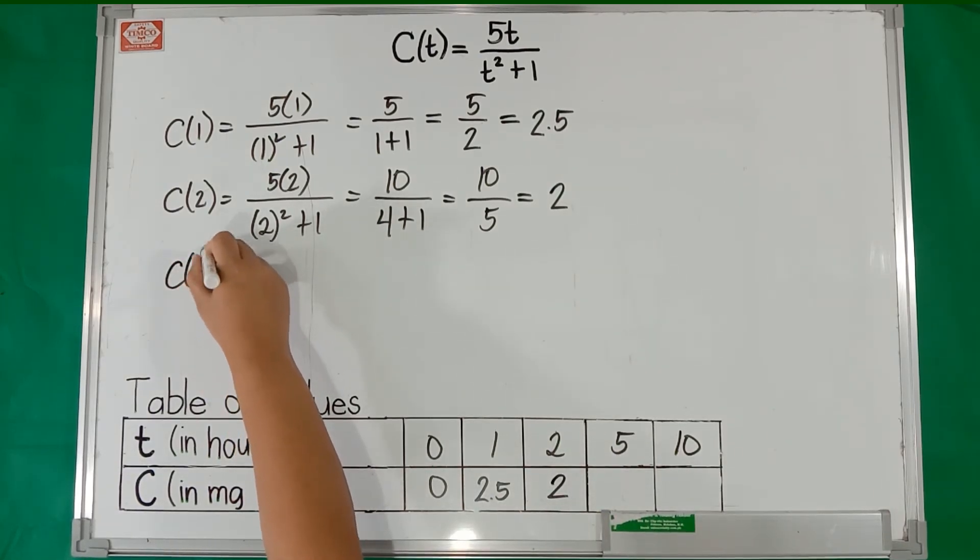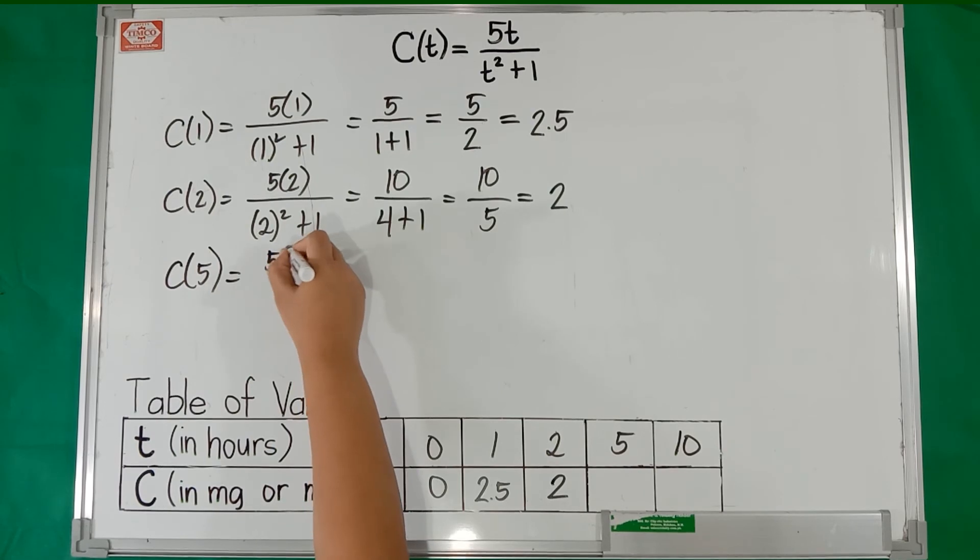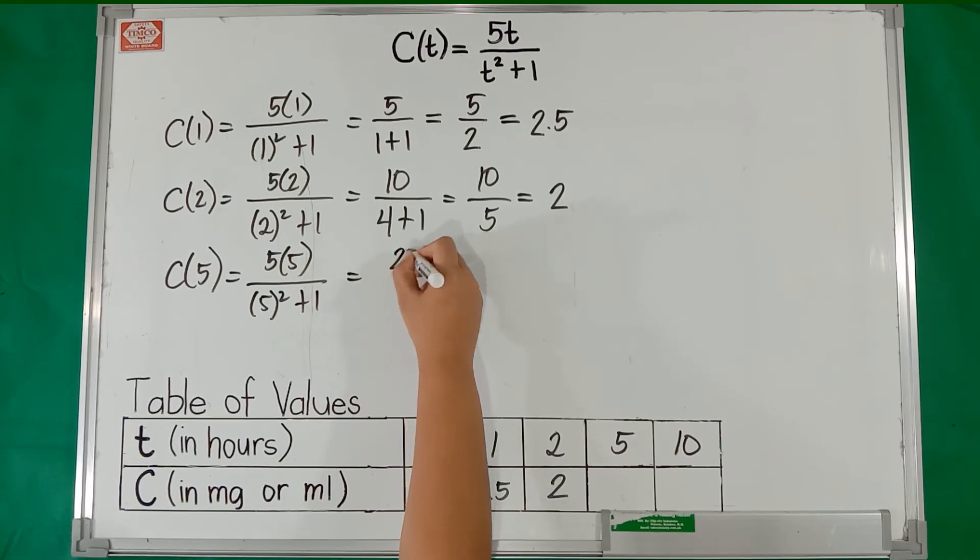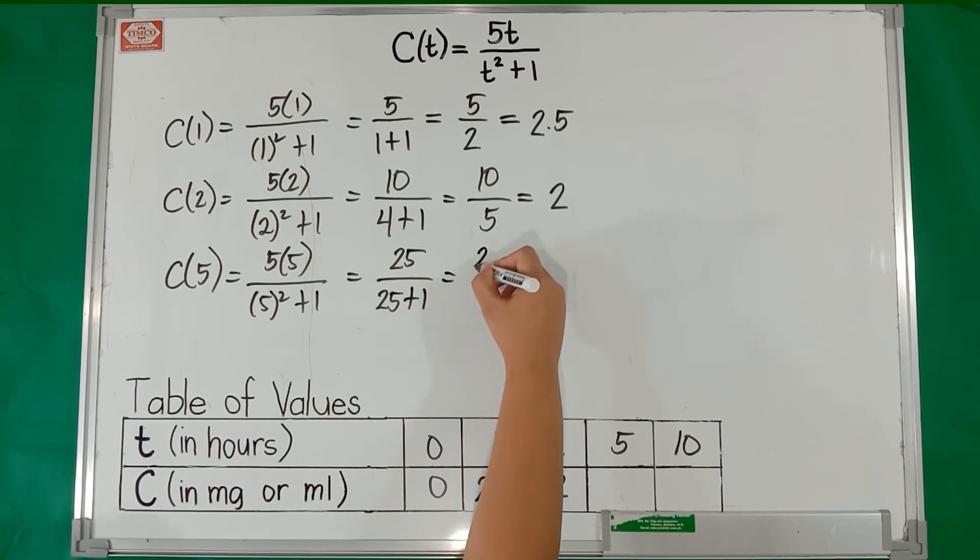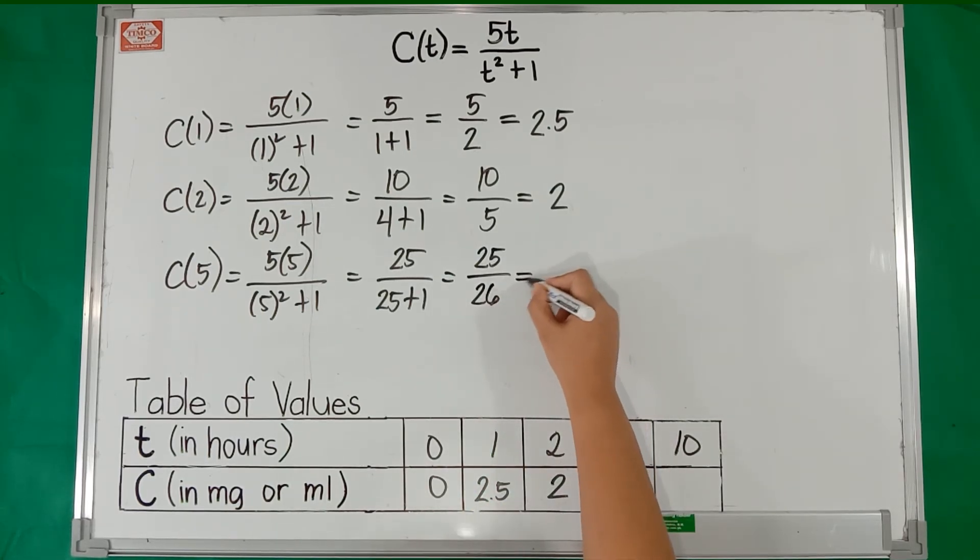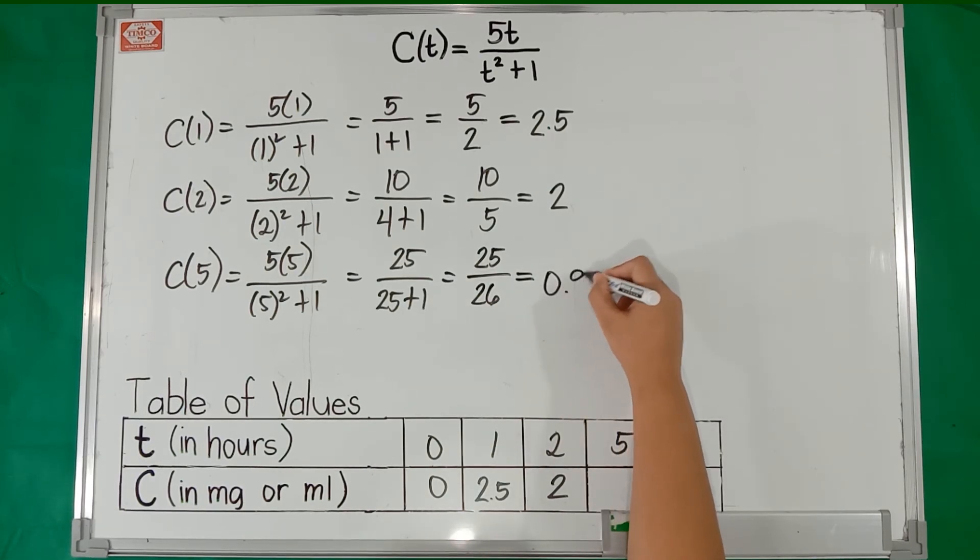Next, c(5) = (5 × 5)/(5² + 1) equals 5 times 5 is 25 and 5 squared is 25 also plus 1. So, 25 over 25 plus 1 is 26. 25 divided by 26 is 0.962.